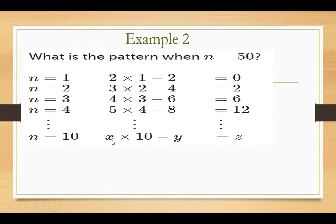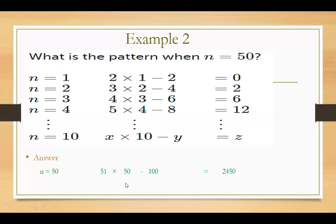For n equals 50: as I told you, the first factor is 1 plus 50, which is 51. And the number being subtracted is the multiple of n, so just like n=4 gives 8, n=50 gives 100. So the expression becomes 51 multiplied by 50, then subtract 100. According to BODMAS rule, we do multiplication first: 51 times 50, then subtract 100, giving us 2,450.